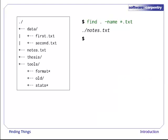Let's try matching by name with find . -name *.txt. We expect it to find all the text files, but it only prints out ./notes.txt. What's gone wrong?